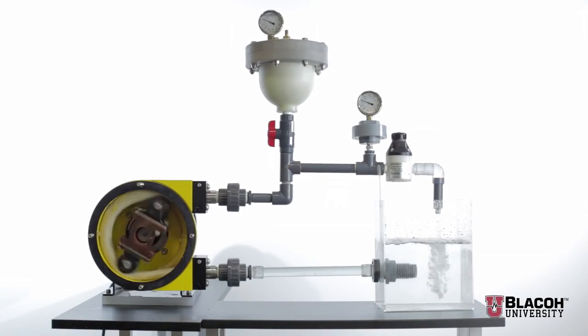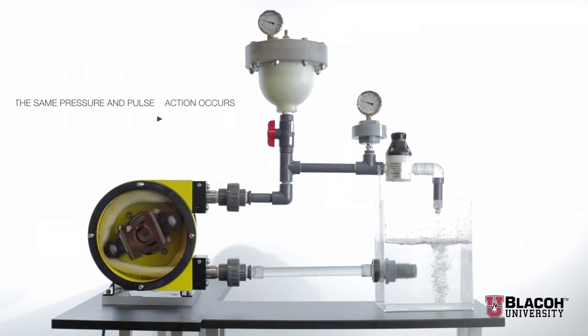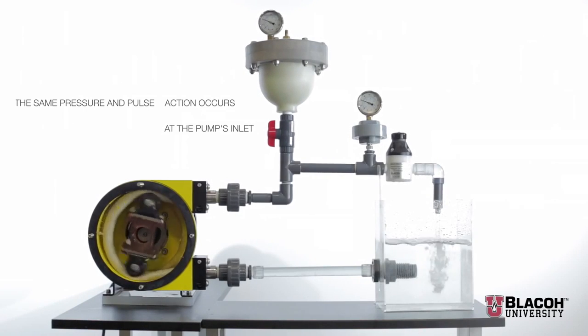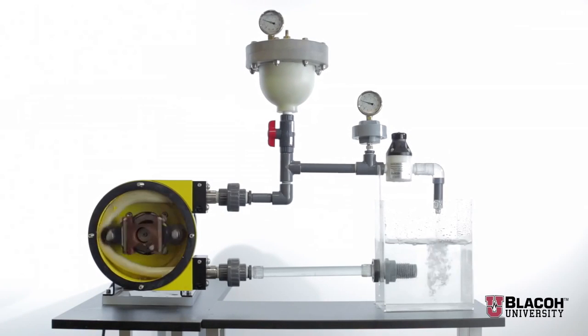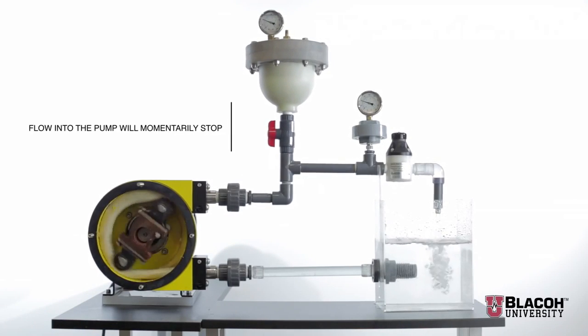While the inlet stabilizer is not pictured in this demonstration, the same pressure and pulse action occurs at the pump's inlet. As a roller shoe passes across the pump inlet and closes it off, flow into the pump will momentarily stop.